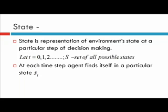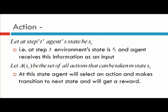Any time the agent wants to make a decision, it finds itself in a particular state, and this information is provided by the environment. Suppose at time t, agent finds itself in state st — meaning at step t, the environment's state is st and the agent receives this as input. On the basis of this state and the reward from the previous action, it will take a particular action governed by the policy which we want the agent to learn.